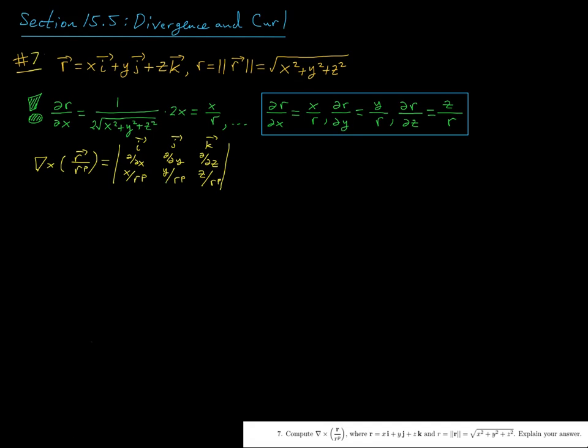All right, in question 7 we're going to return to the radial vector field where we take the position vector r and divide it by a power of its magnitude, and here we're going to compute the curl of this vector field.